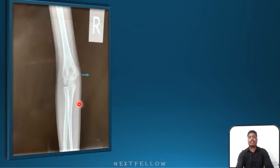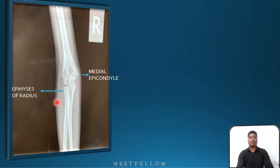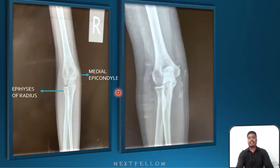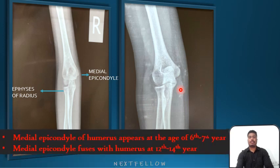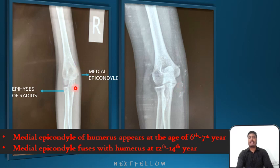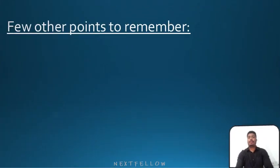This is an x-ray of the elbow joint. You can see the medial epicondyle and the epiphysis of the radius — there is a thin line between both of them, so they are not fused. This other x-ray shows no thin line between them, so it is fused. Medial epicondyle of humerus appears at 6 to 7 years and fuses with the humerus at 12 to 14 years. So this x-ray is greater than 6 years but less than 12 years; this x-ray is 12 to 14 years of age because it has fused.